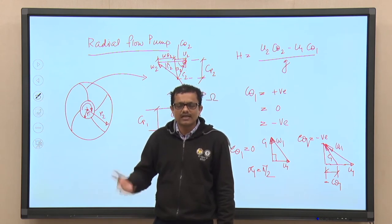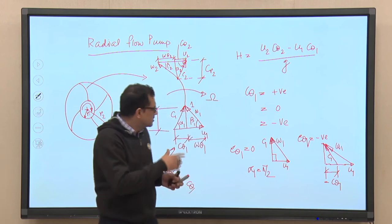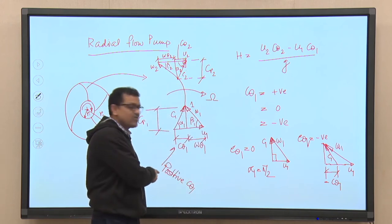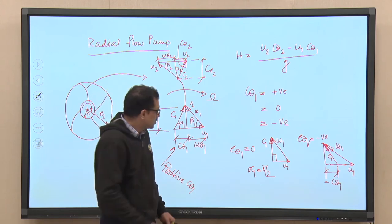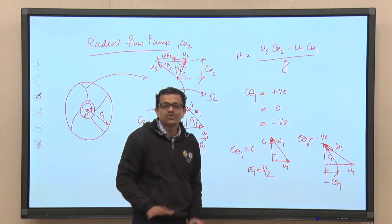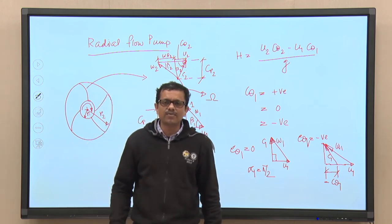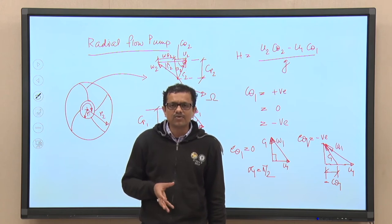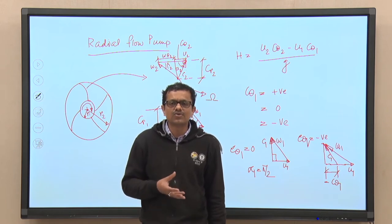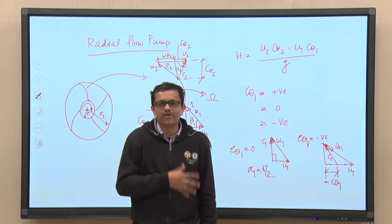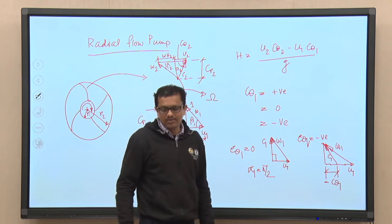We will discuss cavitation later in the course, but it is not desirable at all. Positive c_theta1 is also not desirable because it subtracts from the head developed. Therefore, the ideal condition is c_theta1 = 0 — no swirl at the inlet — which is called swirl-free flow or radial inlet.